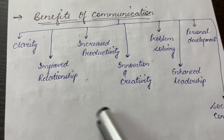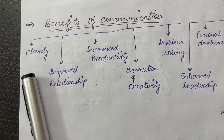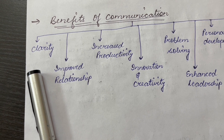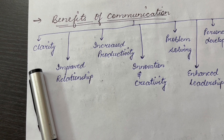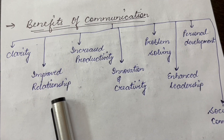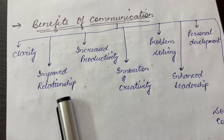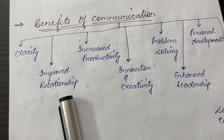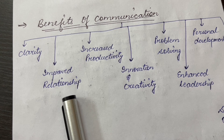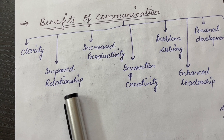So now we will discuss this in detail. First is clarity. Effective communication ensures that messages are clearly understood by all participants involved, minimizing misunderstandings, confusion and ambiguity. Next is improved relationships. Communication fosters better relationships by promoting understanding, trust and empathy. Open and honest communication helps resolve conflicts and strengthen bonds.